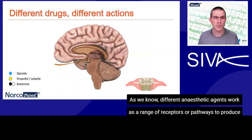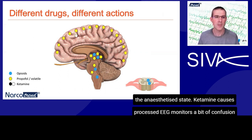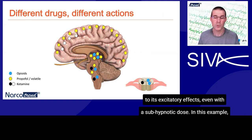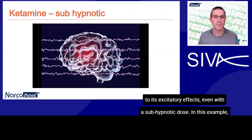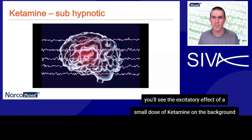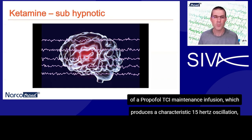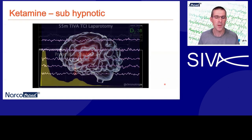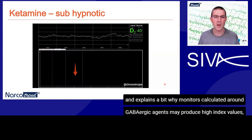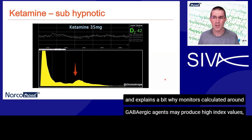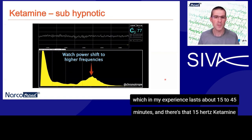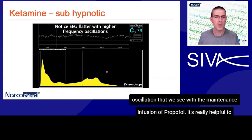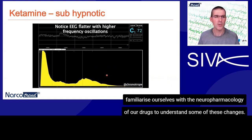As we know, different anaesthetic agents work at a range of receptors or pathways to produce the anaesthetised state. Ketamine causes processed EEG monitors a bit of confusion as paradoxically, despite producing hypnosis, higher frequency oscillations are produced due to its excitatory effects, even with a sub-hypnotic dose. In this example, you'll see the excitatory effect of a small dose of ketamine on the background of a propofol TCI maintenance infusion, which produces a characteristic 15 Hz oscillation visible around two minutes after administration. This example is sped up 10 times. It nicely demonstrates the transitory effect of ketamine, and explains why monitors calculated around GABAergic agents may produce high index values, which in my experience lasts about 15 to 45 minutes. And there's that 15 Hz ketamine oscillation that we see with the maintenance infusion of propofol. It's really helpful to familiarise ourselves with the neuropharmacology of our drugs to understand some of these changes.